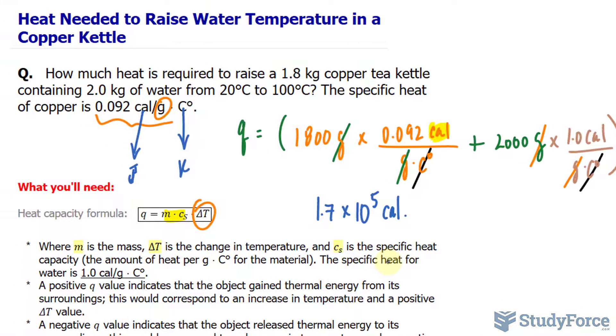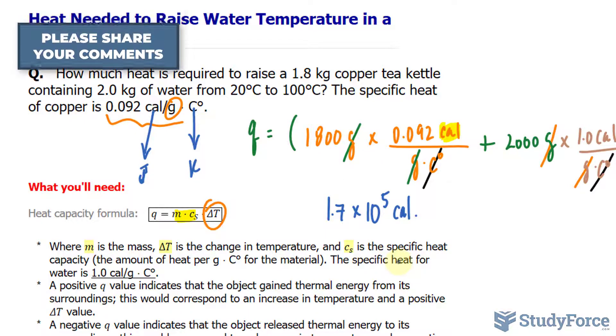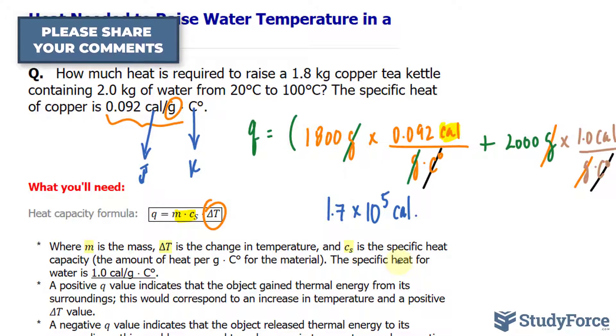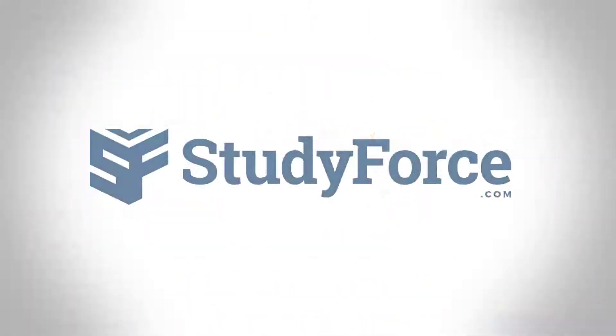Before I conclude, I want to point out that sometimes questions like these will provide information in moles as opposed to mass. In this case, they provided mass in kilograms. If that ever happens, you could convert moles to mass by multiplying the number of moles of the substance to its molar mass. And that can be found in a periodic table. Or, if they give you the molar heat capacity as well, you can use that instead of the specific heat capacity, and you won't need to convert moles to mass before using this formula.